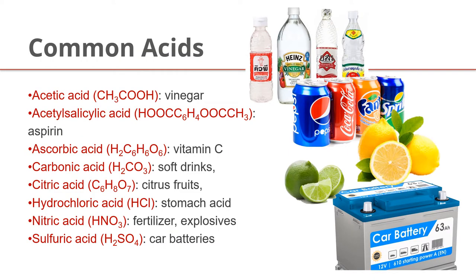If we look at common acids in terms of chemical formulas, you have probably seen CH3COOH — this is acetic acid, the substance found in vinegar. Other acids shown here include acetylsalicylic acid found in aspirin, ascorbic acid which is vitamin C, carbonic acid in soft drinks, citric acid in citrus fruits like lemon, lime, and oranges, and hydrochloric acid in our stomach, which is essential for digestion.